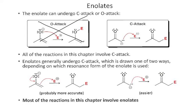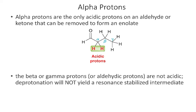All reactions in this chapter involve carbon attack, and most involve enolates. The chapter focuses on alpha carbon chemistry because alpha protons are acidic — removing one gives a lone pair that is resonance-stabilized through its relationship to the carbonyl pi bond, creating an allylic lone pair. Beta and gamma hydrogens are too far from the carbonyl pi bond to be resonance-stabilized, which is why we focus specifically on alpha carbon chemistry.